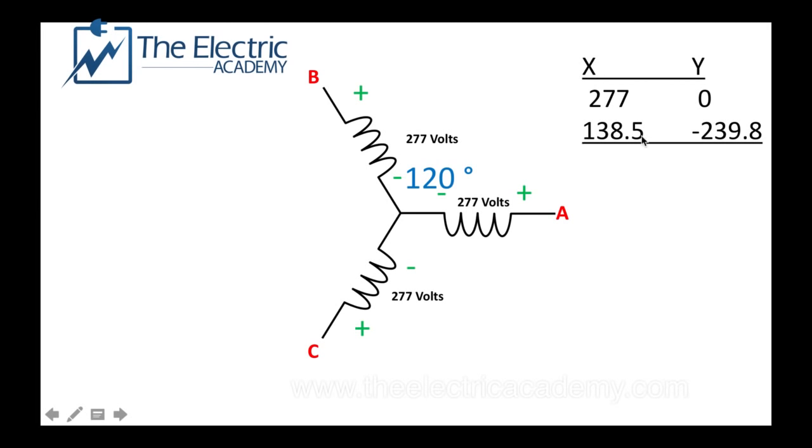And that gets me my X is 138.5 and my Y is negative 239.8. Okay, it still doesn't look anything like 480, does it? Because if I add the X's up, I'm going to get 415.5, and if I add my Y's up I get negative 239.8. So this is the point you're thinking I'm smoking crack, except this is adding these two vectors up and getting me an overall X and an overall Y.